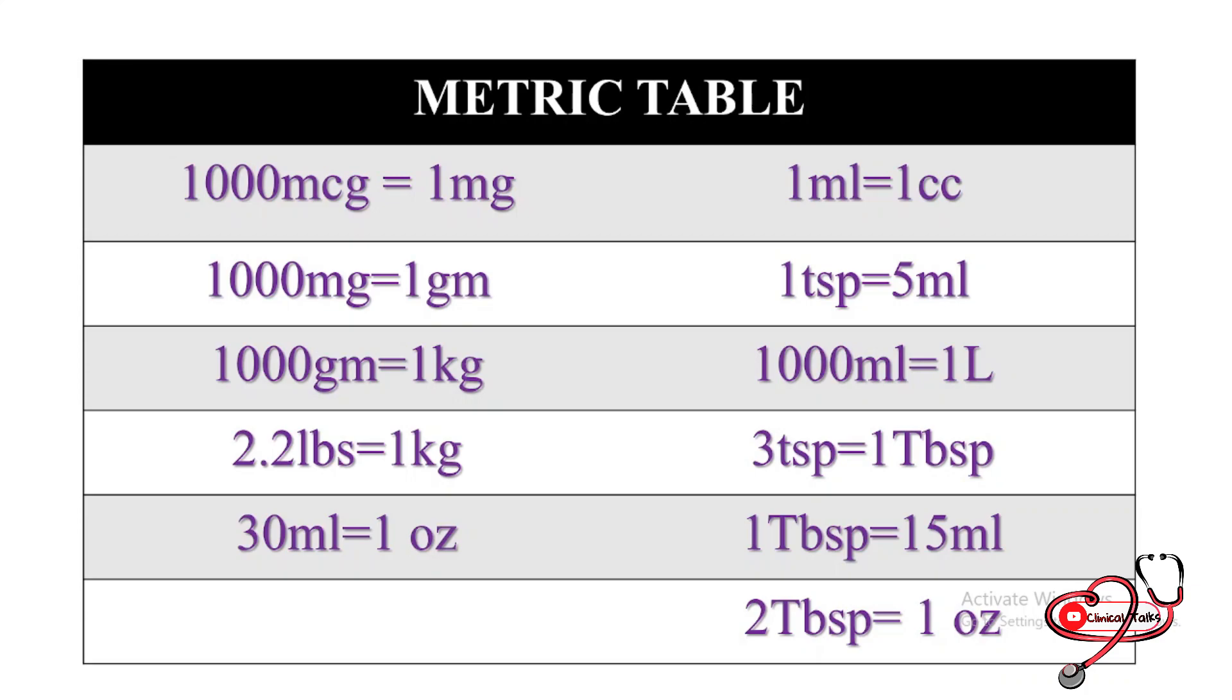It means one tablespoon equals 15 milliliters, and two tablespoons equals 30 milliliters, which as we already know, 30 milliliters equals one ounce. If you have any doubts or suggestions, please comment.